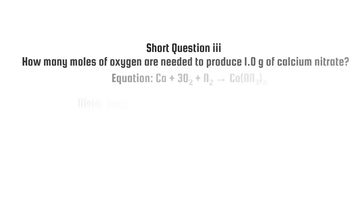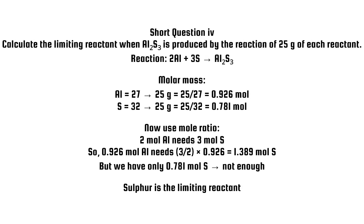Short question 4. Calculate the limiting reactant when Al2S3 is produced by the reaction of 25G of each reactant. Now use mole ratio. 2 moles Al needs 3 moles S. So, 0.926 moles Al needs 3 halves times 0.926 equals 1.389 moles. But we have only 0.781 moles S, not enough. Sulfur is the limiting reactant.